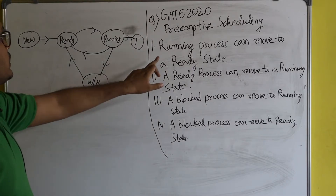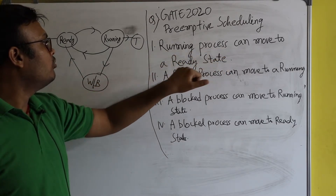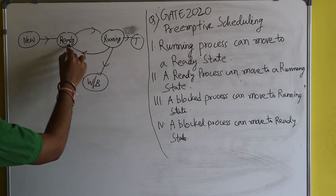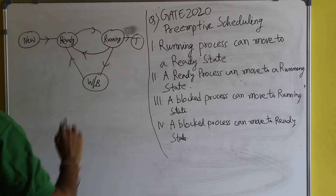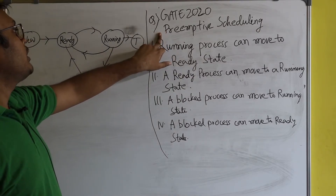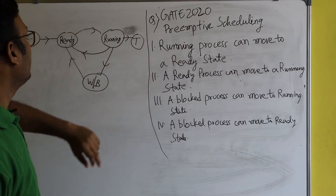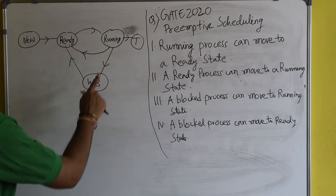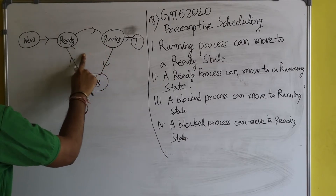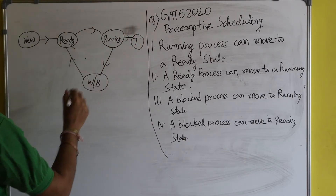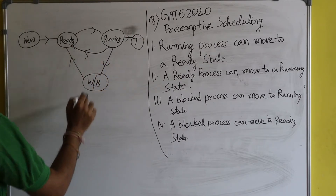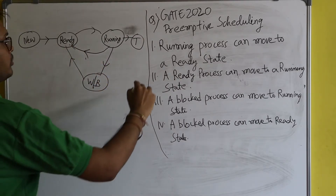The first statement: a running process can move to a ready state — yes, this is correct. Because it's preemptive scheduling. If the question had said non-preemptive scheduling, this option would be false, since in non-preemptive scheduling there is no preemption and no transition from running to ready. But since it's preemptive, option one is correct.